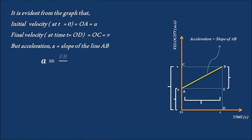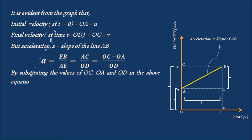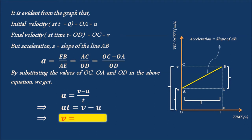Where A is equal to EB by AE, which is equal to AC by OD, which is equal to OC minus OA by OD. By substituting the values of OC, OA, and OD in the above equation, we get A is equal to V minus U by T. That implies A into T is equal to V minus U. By sending U to the other end, we get V is equal to U plus AT. This equation is called the first equation of motion.